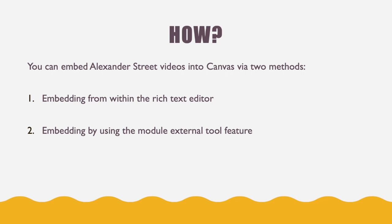Now that we have the what's out of the way, we can move on to the part you really want to know — the how. You can embed Alexander Street videos into Canvas via two methods: they can be embedded from within the rich text editor, or they can be embedded by using the module external tool feature.